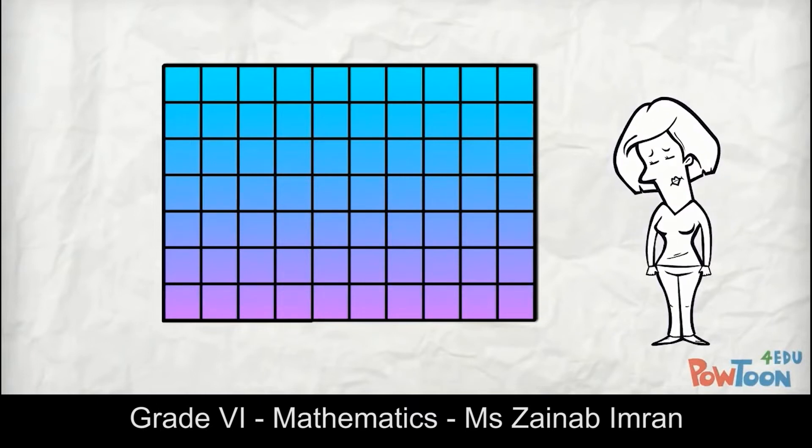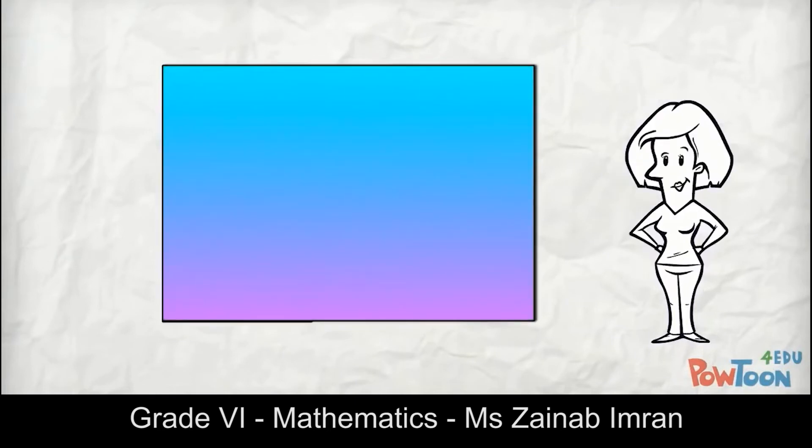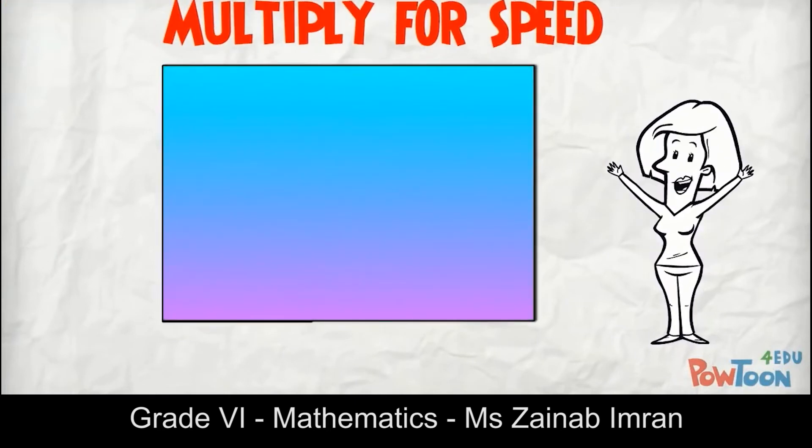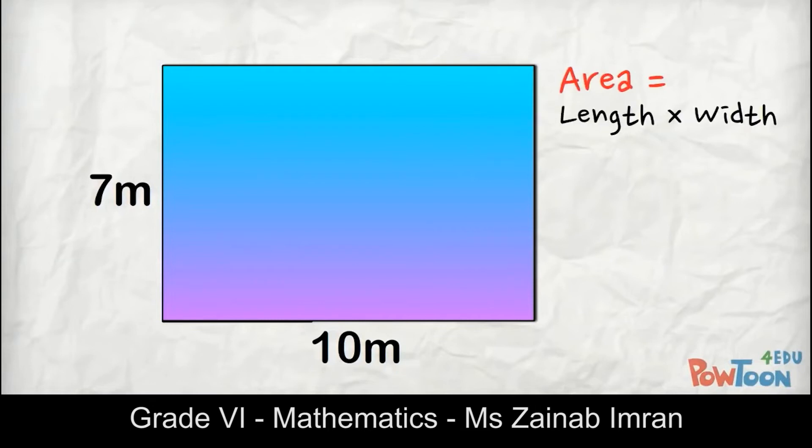Area is length times width, so 10 times 7 is 70. 70 what? The diagram shows us the measurements are in meters, so we have to put that in our answer. Area is 70 m² for meters squared. The little 2 superscripted up here stands for squared. It makes sense because we measured in two dimensions: length and width.